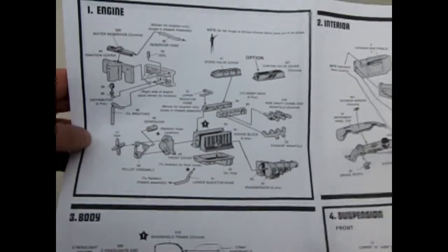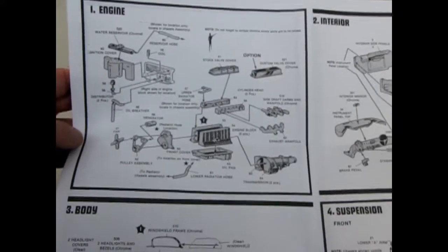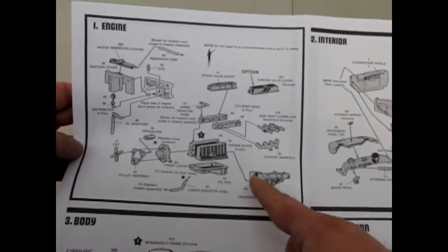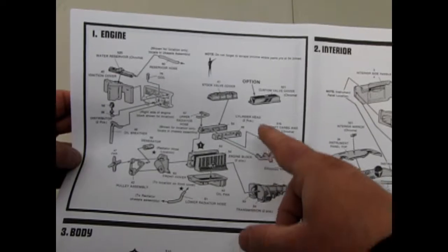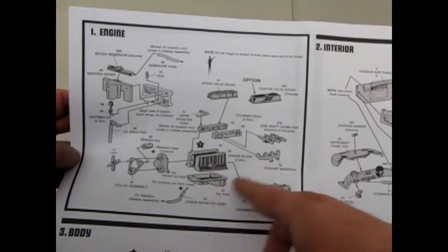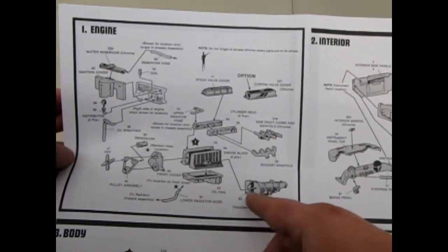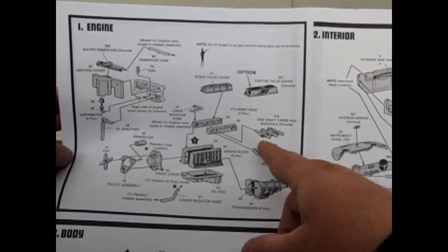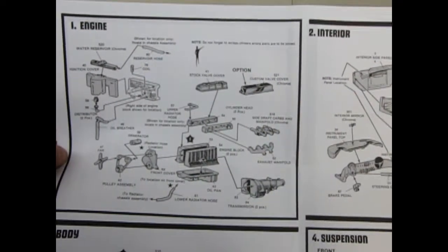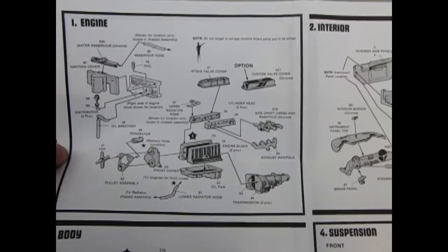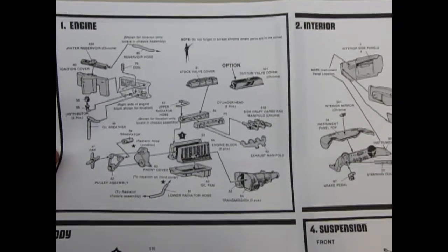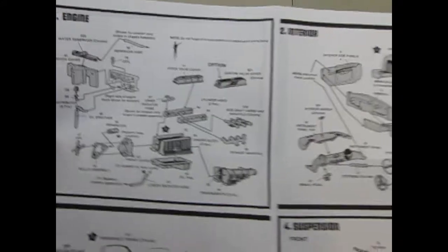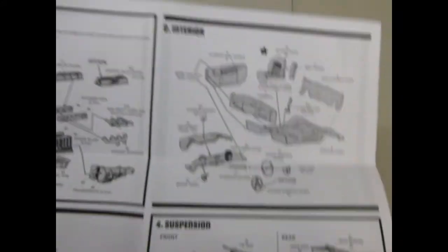Now what makes this kit unique actually is that there was some retooling done. The original kit that came out was a '55 Corvette and AMT Ertl backdated it to a '53. I do believe there are some parts in here like this custom valve cover and the manifold where you can convert this car to a 1954.